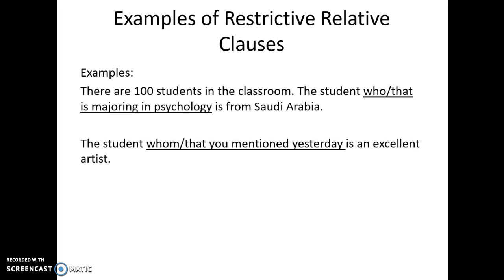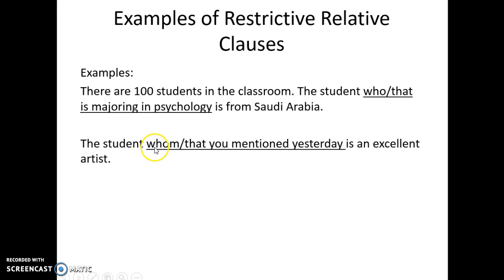Here's another example: 'The student whom you mentioned yesterday is an excellent artist.' We could also say 'the student that you mentioned yesterday is an excellent artist.' Again, we need this relative clause to identify which student we're talking about. If we take out the relative clause, we end up with 'the student is an excellent artist' — we have no idea which student is being talked about. So we need this information to determine which specific student we're talking about.